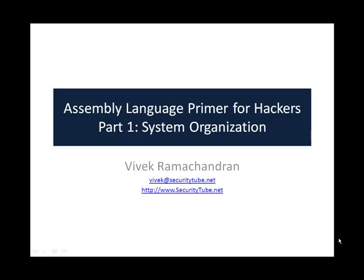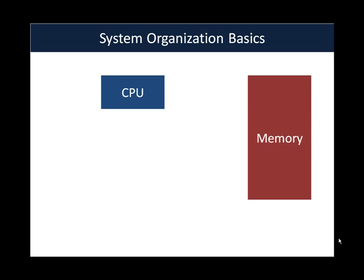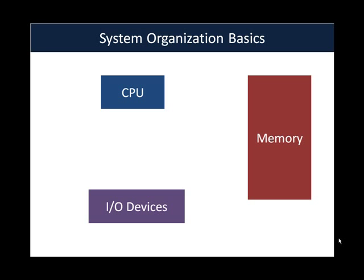Let's now move on to the actual presentation: system organization basics. In any given computing system we have the CPU, or central processing unit. Then we have memory, which is where things are stored at runtime — your RAM. And then we have input/output devices, which would be your keyboard, your monitor, your mouse, etc.